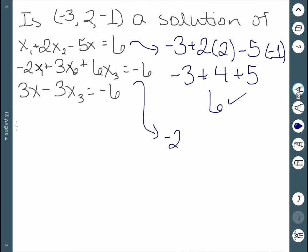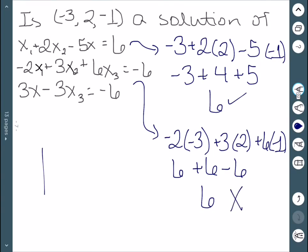If I try the second one, negative 2x1 plus 3x2 plus 6x3. This would be 6 plus 6 minus 6 which is positive 6. So this one is not true.